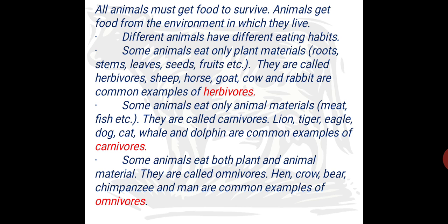Some animals only eat animals or flesh. They are called carnivores. As you know children, lion, tiger, eagle — what do they eat? They eat only flesh or animal materials. Dolphins are also common examples of carnivores. Carnivores means those animals that are basically dependent on animal materials only — they eat flesh, meat, etc.